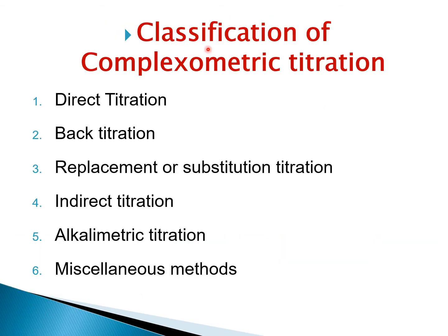The classification of complexometric titrations includes: direct titration, back titration, replacement or substitution titration, indirect titration, alkalimetric titrations, and miscellaneous methods. These are the main categories of complexometric titration.